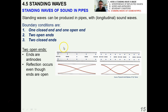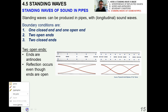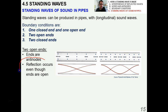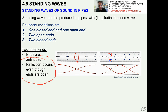Two open ends: if you have two open ends, it turns out that the ends are antinodes, and reflection occurs even though the ends are open — that's kind of a funky thing that is a little bit surprising. Remember that sound waves are longitudinal waves, which are really variations in pressure where molecules are going back and forth. Where you have nodes, you have no movement of air molecules, and you have maximum movement of air molecules where there's an antinode — there and on the ends.